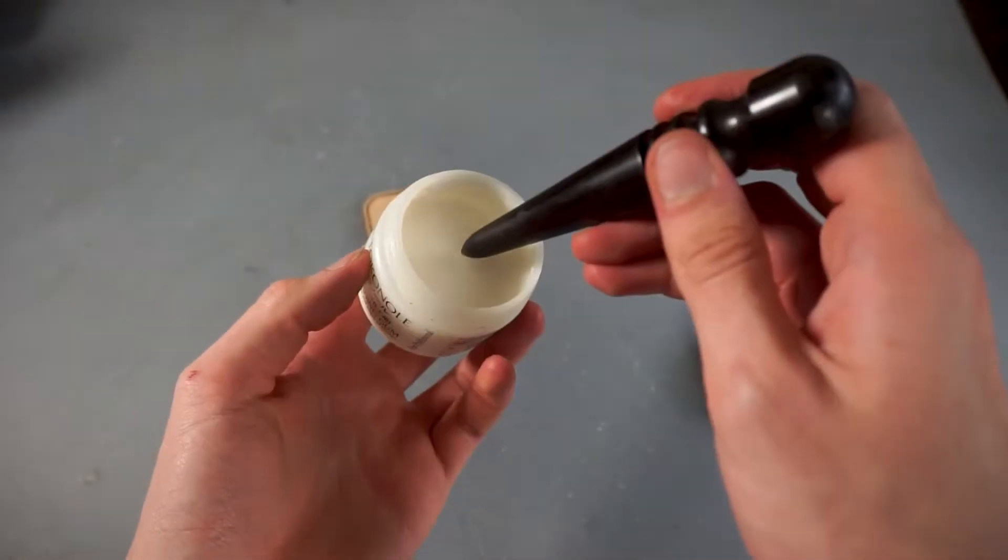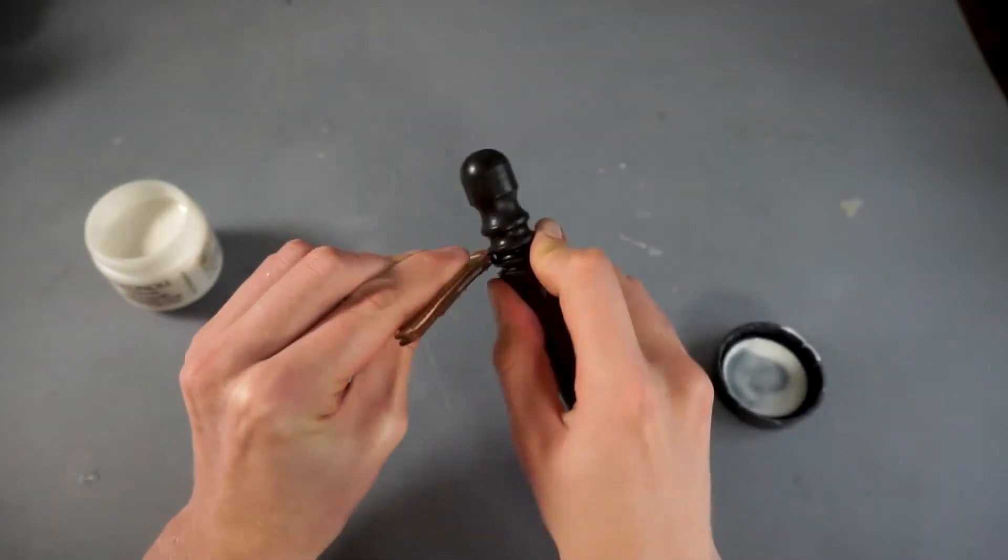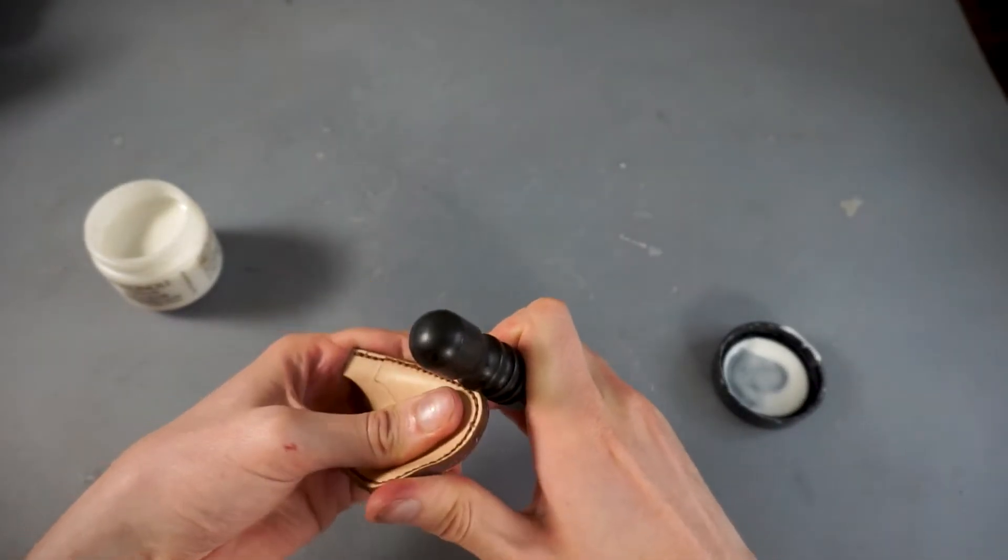Only, for now, the edge is a bit rough, so to fix that, you can use token oil, rub it on the leather edge, and it will become smooth and shiny.